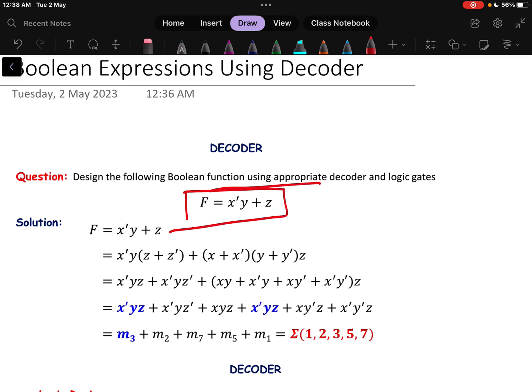One thing to remember: to implement any kind of Boolean expression, first the expression has to be represented in a SOP format and then write the canonical form, then it will be easy. In the previous video we discussed the full adder using decoder, if you see that you can understand how to implement.